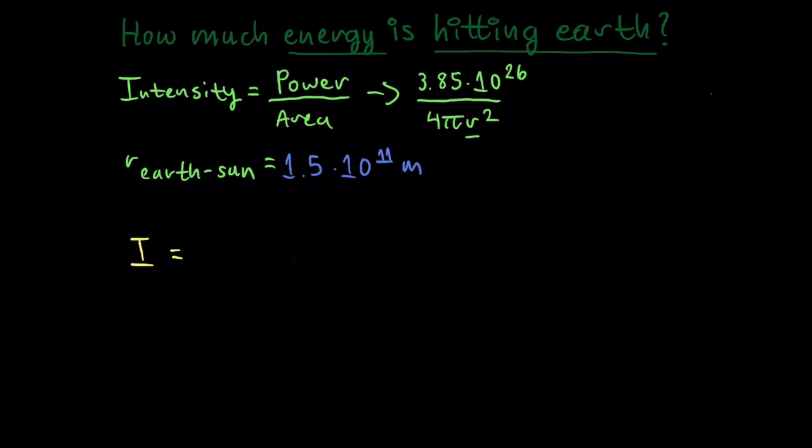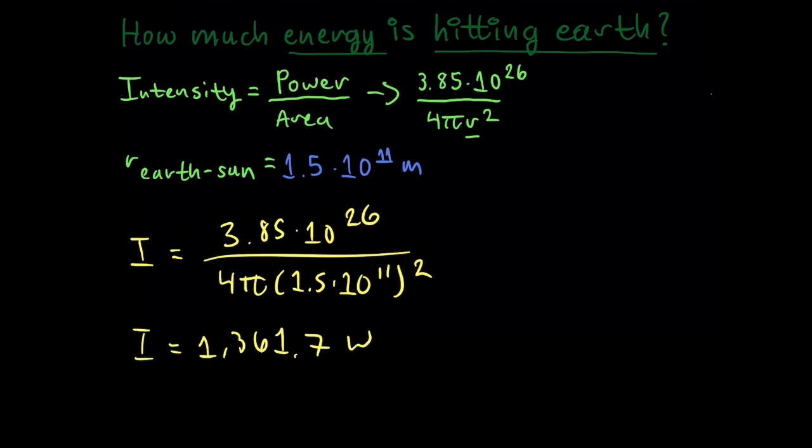Now that we have found the power of the sun, I would like to find out how much energy is hitting the earth. To do this, we would find the intensity, which is power over area. The power being 3.85 × 10^26 over 4πr². In this case, the radius would be the distance between earth and sun, which is 1.5 × 10^11 m. So it would be 4π(1.5 × 10^11)², which gives you 1,361.7 watts per meter squared.